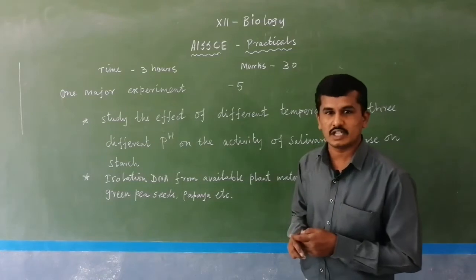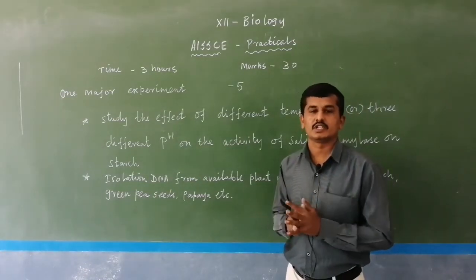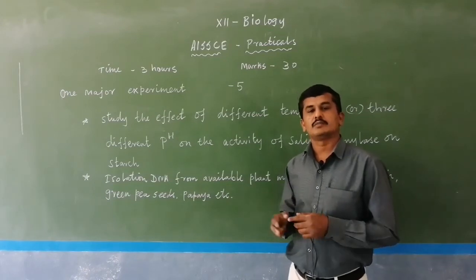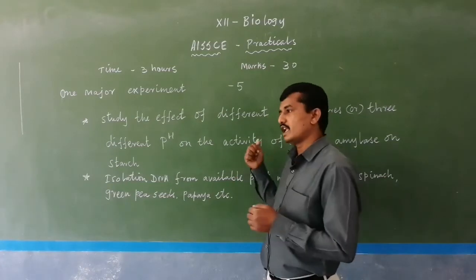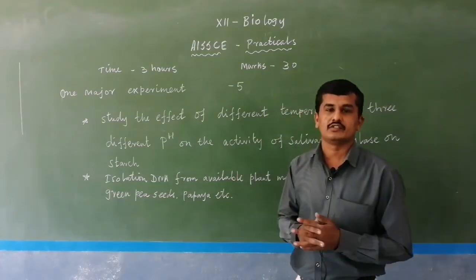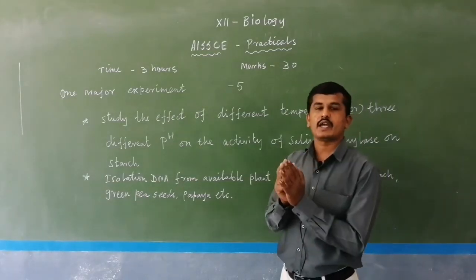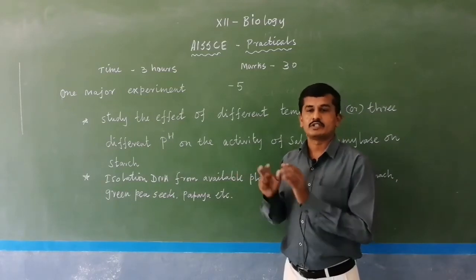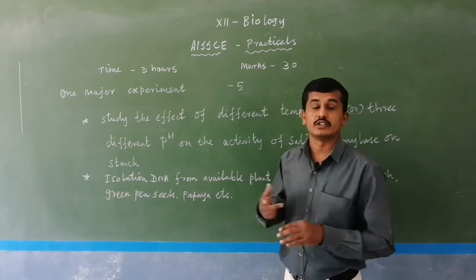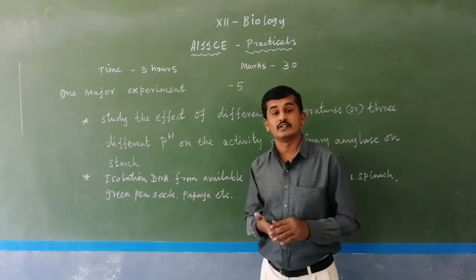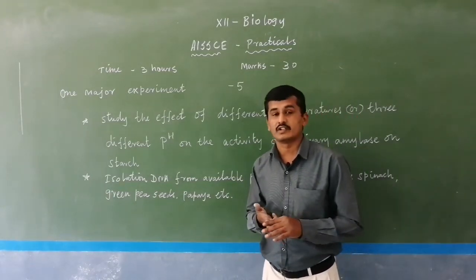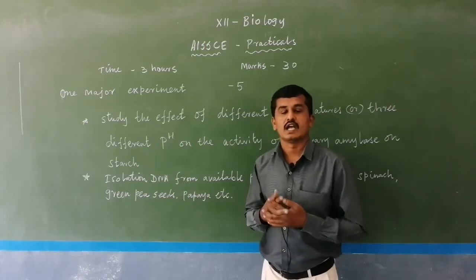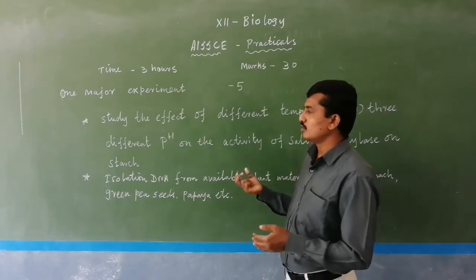We generally know salivary amylase digests starch. But how do you prove it with an experiment and show your result? Science needs evidence — simple theory is not acceptable. Scientists need practical evidence; only then does a scientist accept a theory. So, you prove salivary amylase digests starch only in particular temperatures. Normally salivary amylase digests starch at our body temperature of 37°C. If your temperature rises to 39 or 40°C, salivary amylase does not digest the starch. Only at the proper temperature does salivary amylase digest the starch.